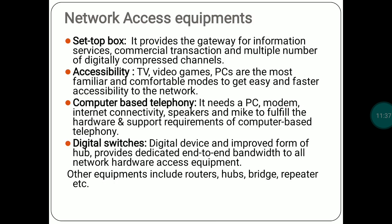Then we have network access equipment. We have different equipment such as a set-top box, which basically helps us to access the network. Through set-top box, we can access the internet. Then for accessibility, we have TV, video games, and PCs, with which we are all familiar and through which we can easily access the internet.